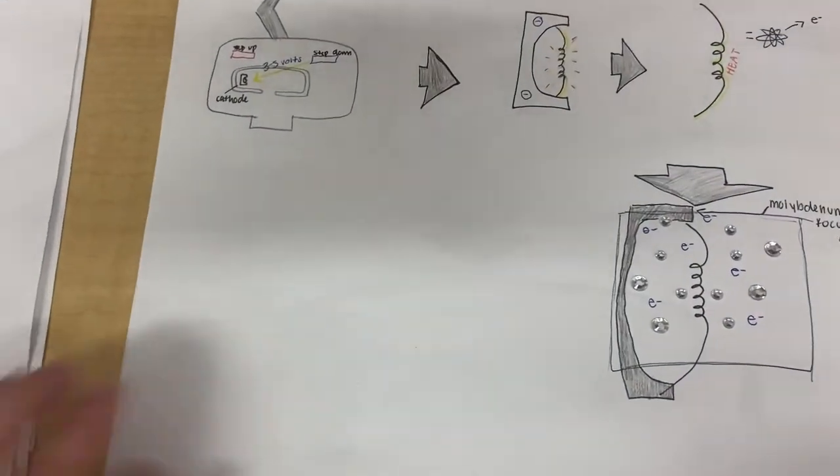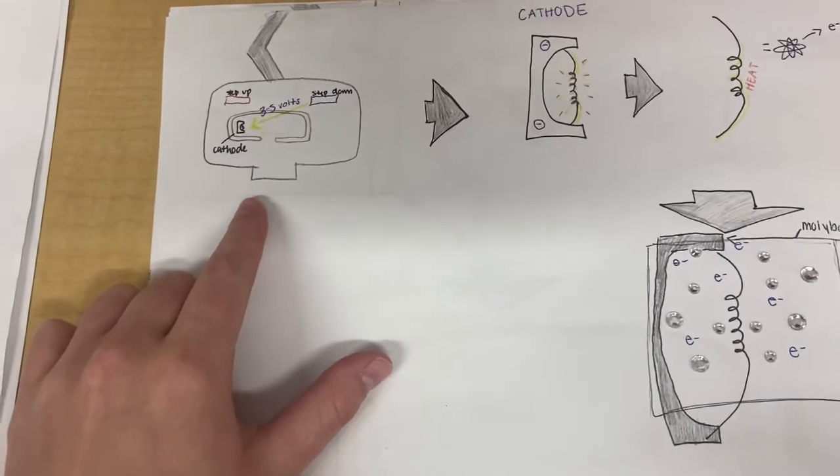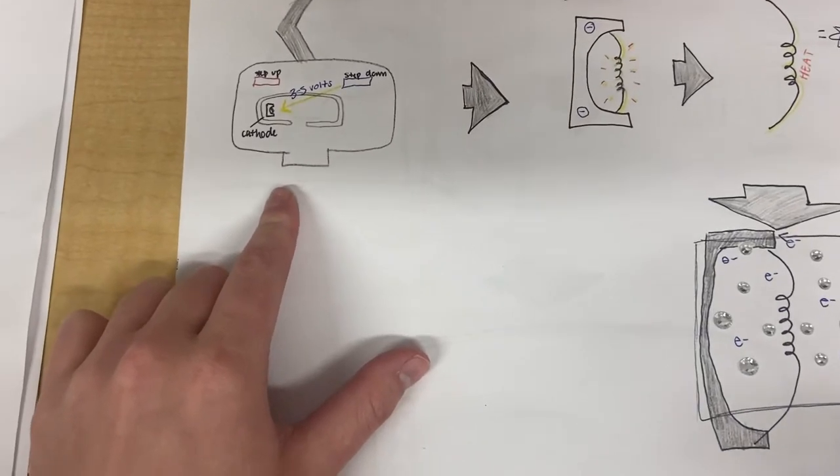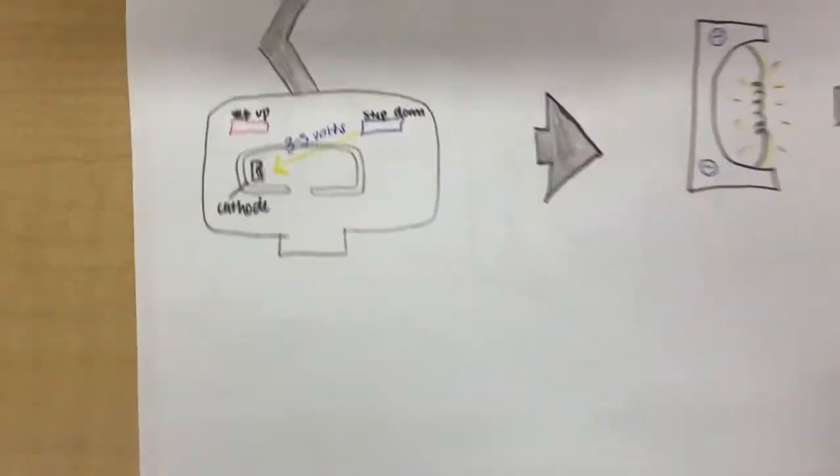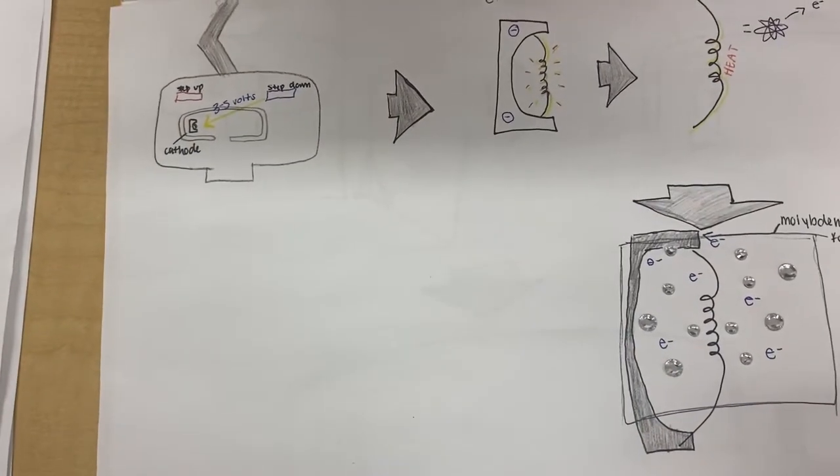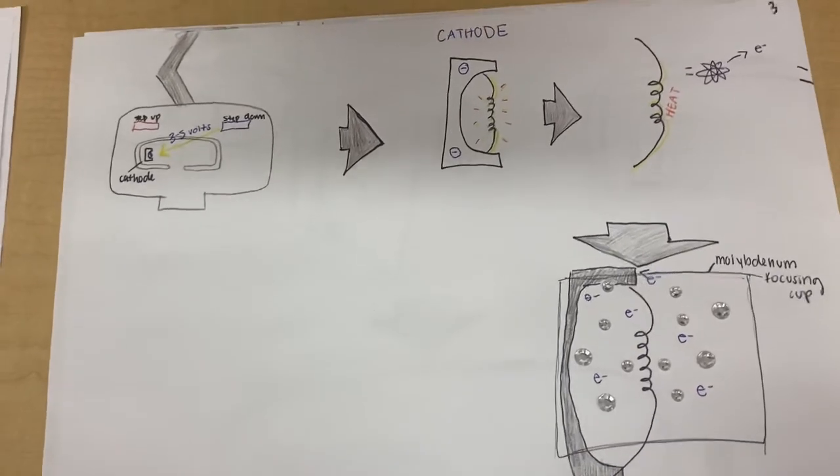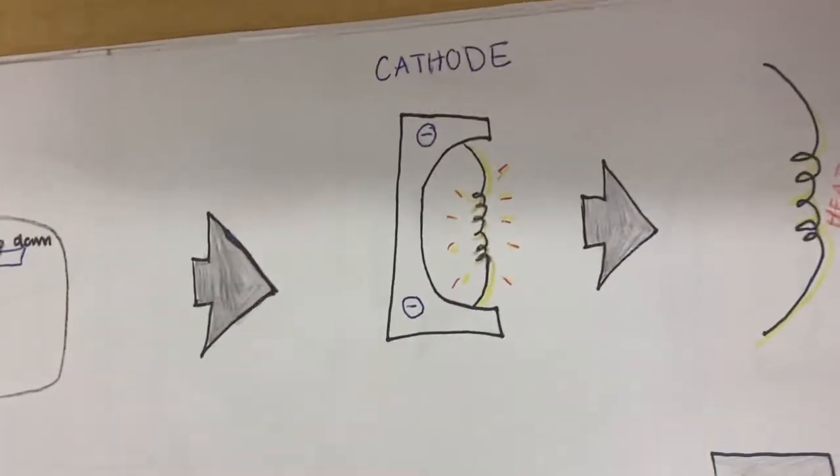Going on, the 3 to 5 volts will then enter the tube that contains the negative cathode, as you can see here. The volts will then heat the tungsten filament in the cathode and make the filament glow.